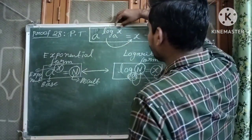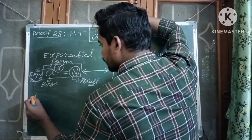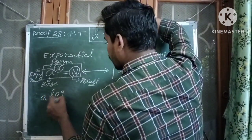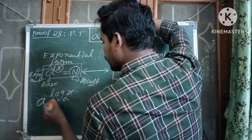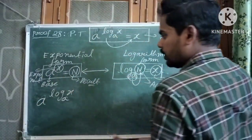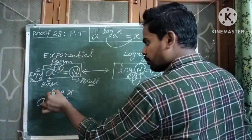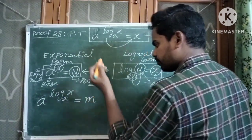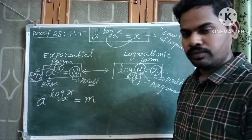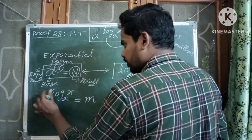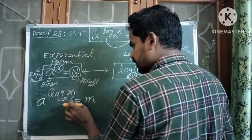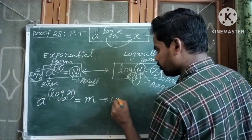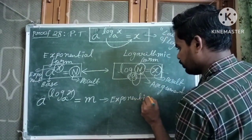Coming to our proof, let us consider the LHS: a to the power log x to the base a. Let us say a power log x to the base a is equal to some m. Here, a power capital X equals m is in exponential form.